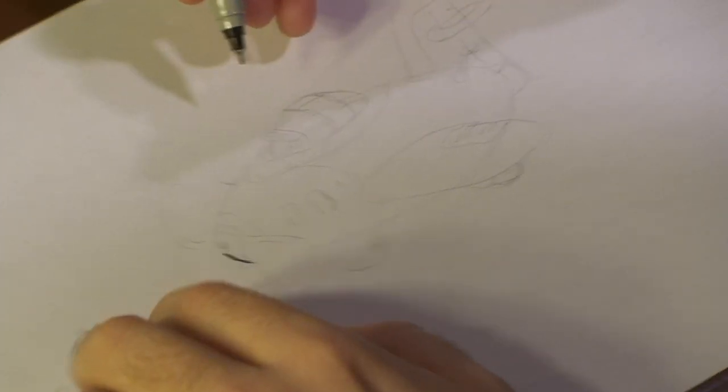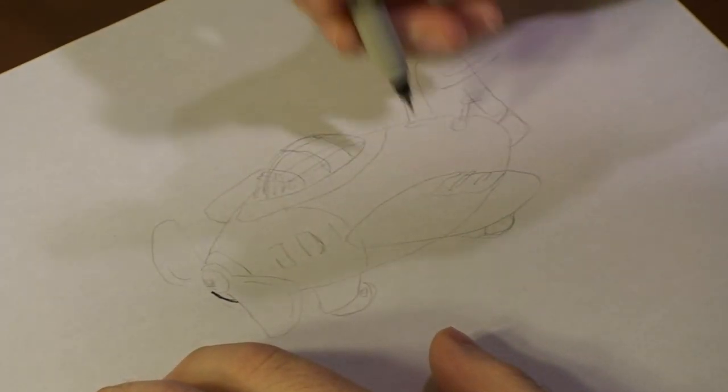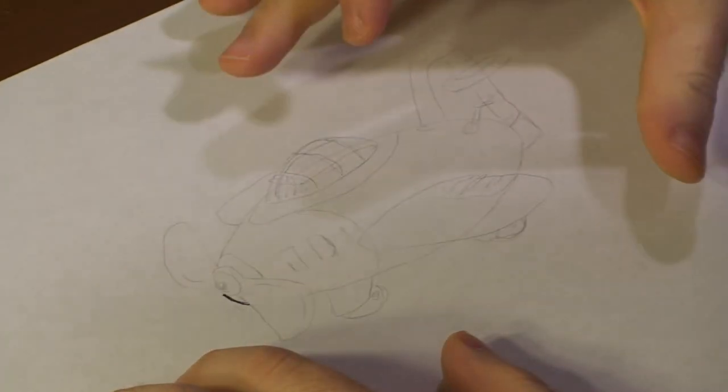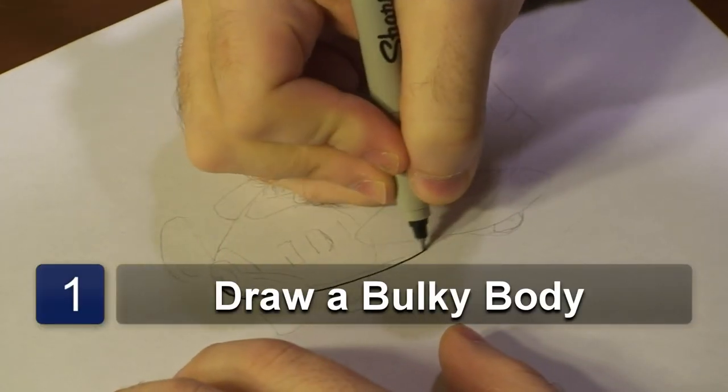Now whenever you're first drawing your toy plane, you want to remember that with toys, they're going to be more abstract, more different, not going to be following the same patterns because these are for kids. So, I'm going to start with a big, bulky body.